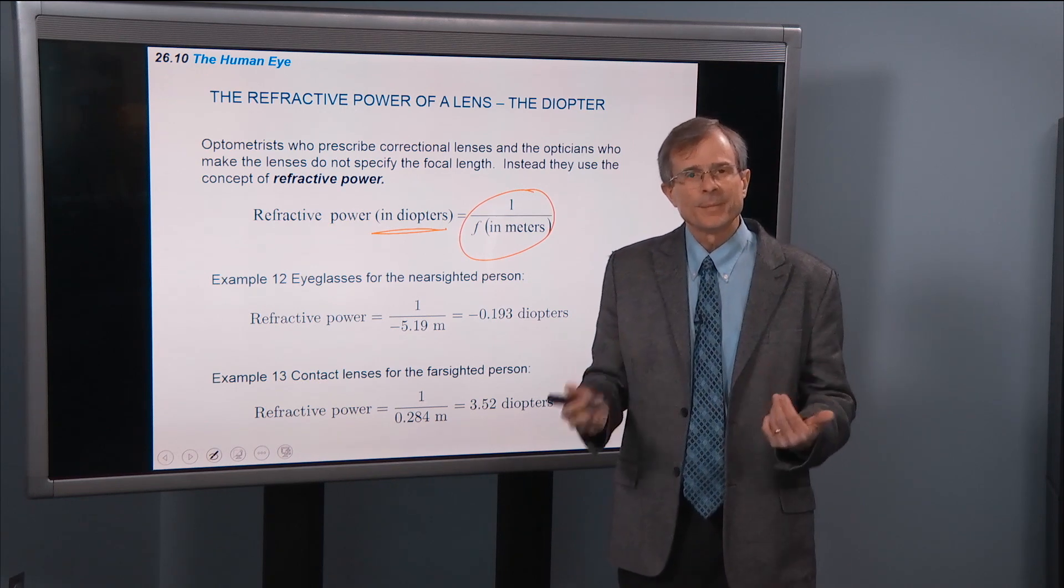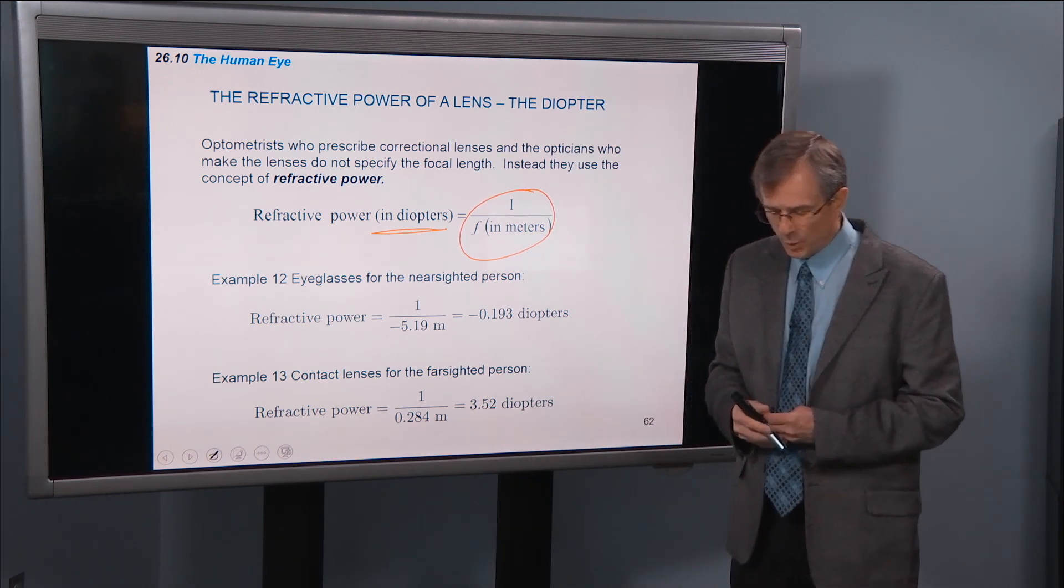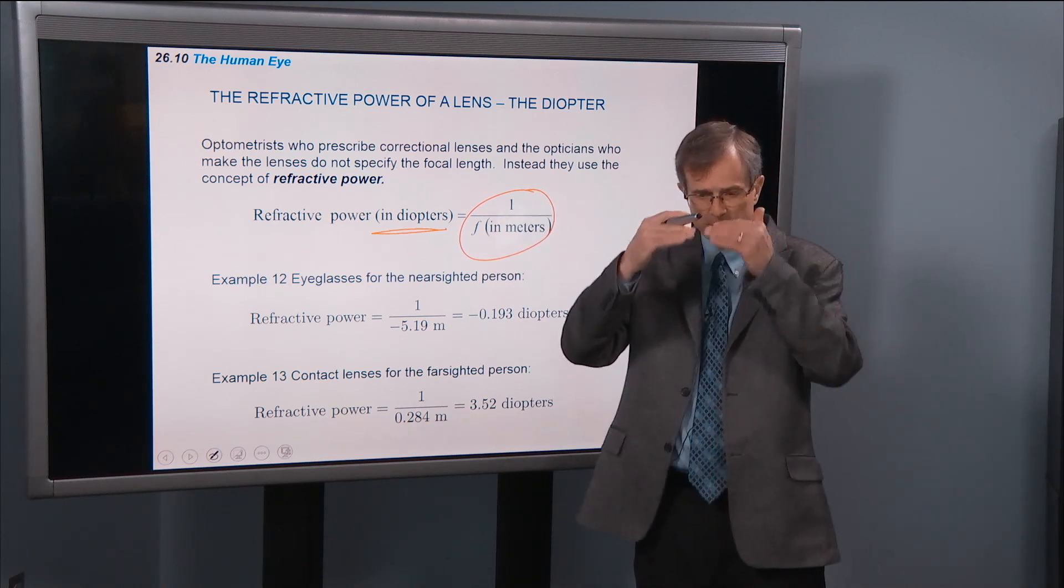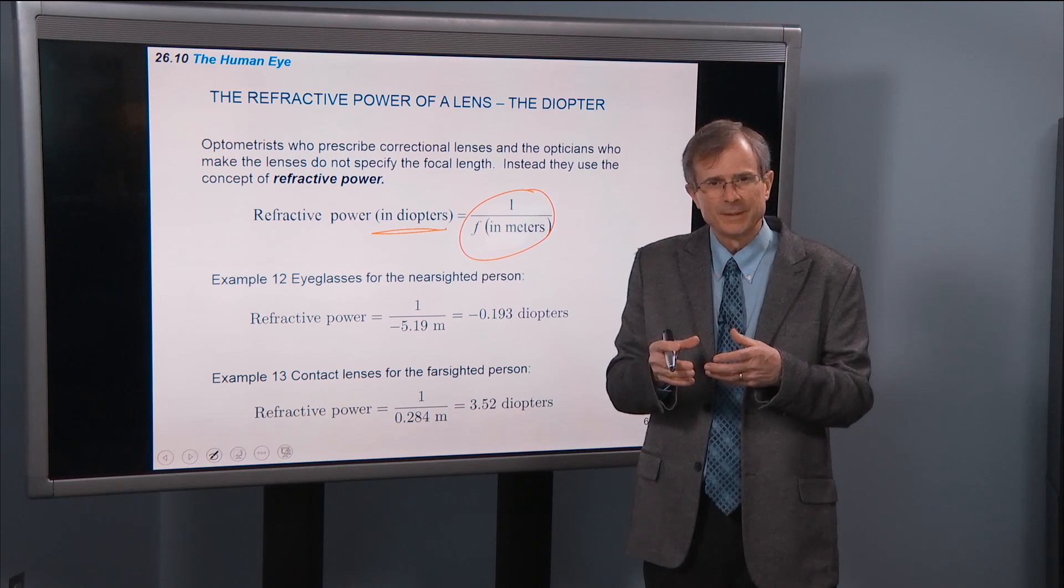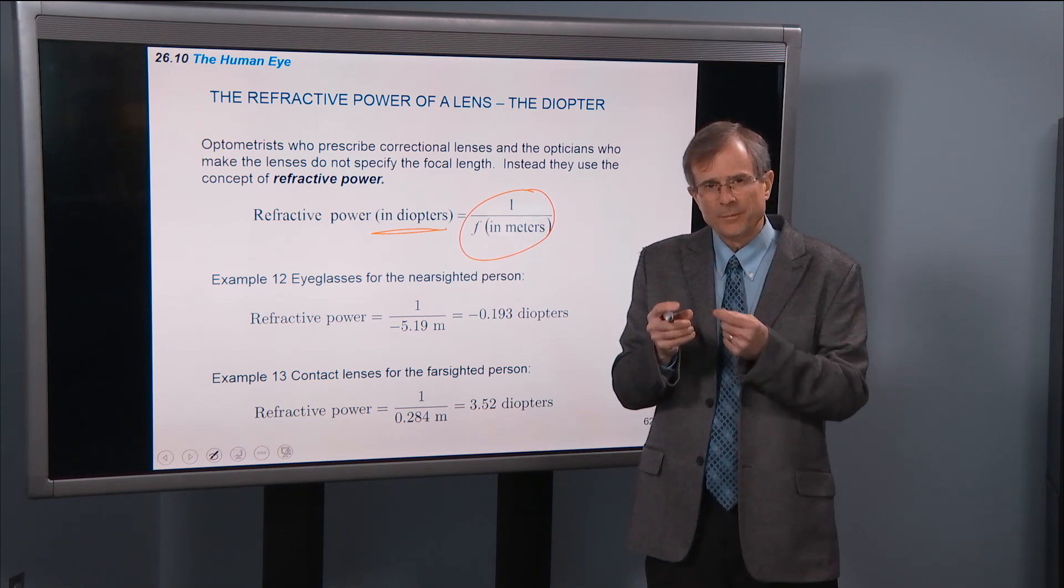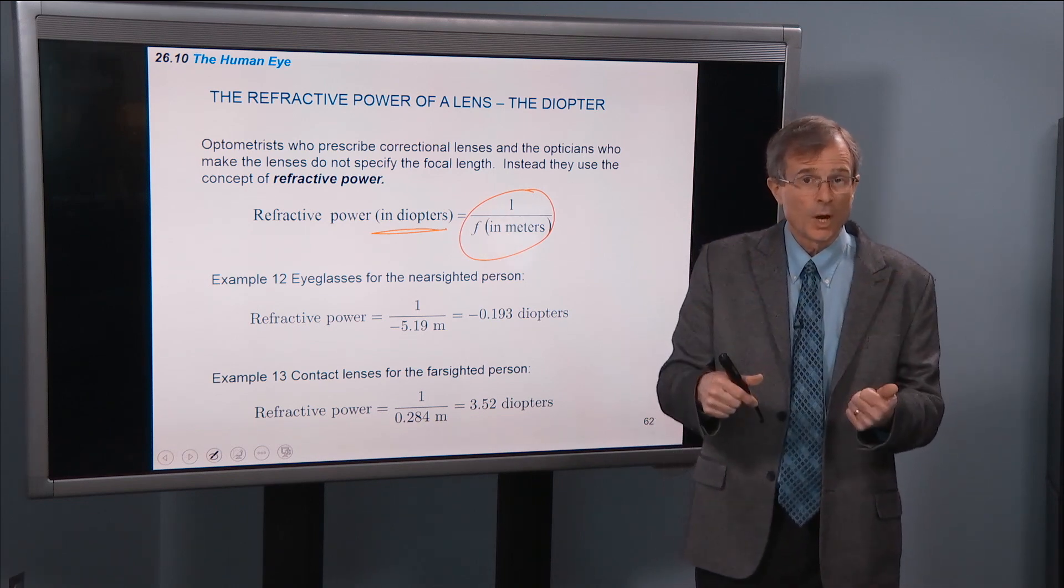So if the focal length is very small, that means it's a big fat lens, and it's really curving the light a lot. If the focal length is small, then the diopter, the number of diopters is large.